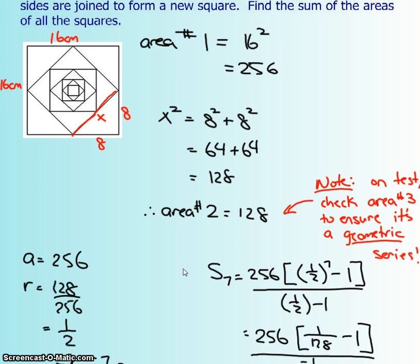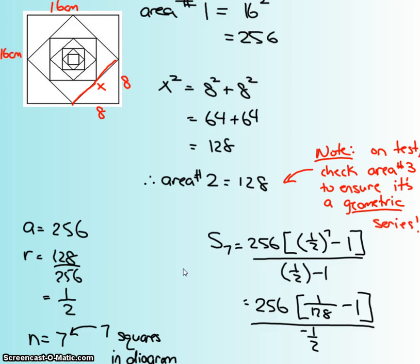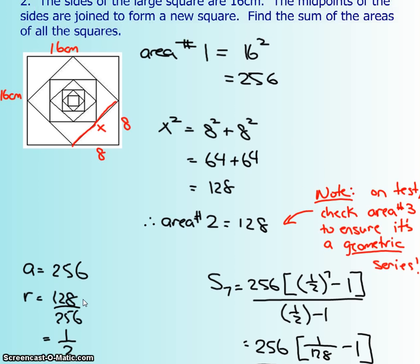So, let's continue, I'm having a little bit too much fun with this after school. Okay, so, a equals 256, your r is whatever the second one is divided by the first one. Okay, so that's a half, so it looks like it's multiplying by a half each time, or it's half as big. Okay, and then they said they wanted all the squares...